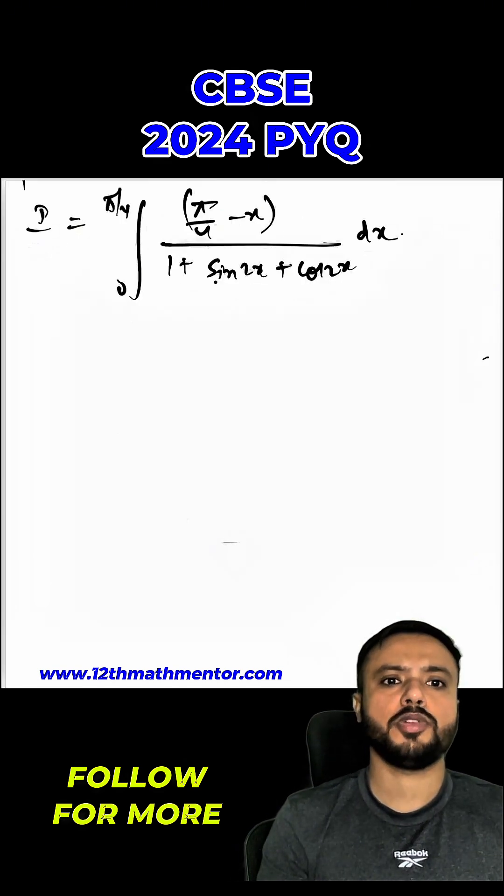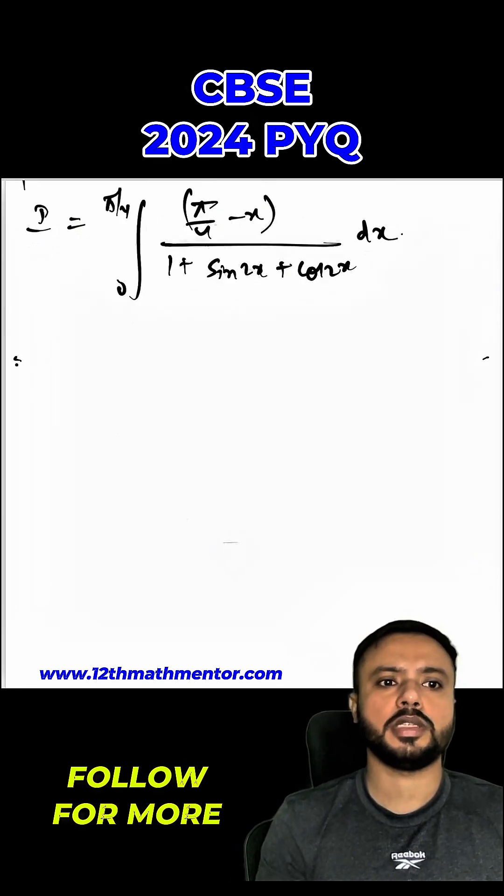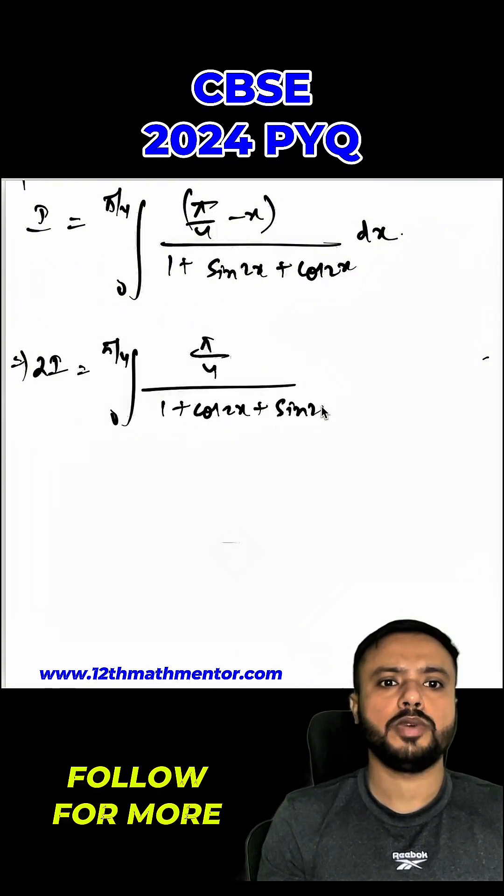Now, I will separate the fractions. And I will transfer this x upon 1 plus sine 2x plus cos 2x in the LHS. So, I can write this as 2i equals to 0 to pi upon 4, pi by 4 upon 1 plus cos 2x plus sine 2x dx.